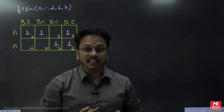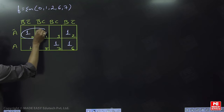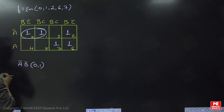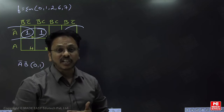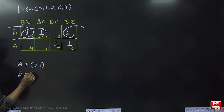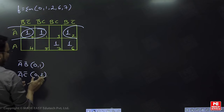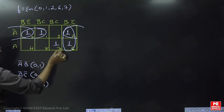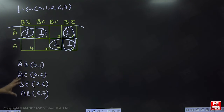First, let me consider all possible groupings, because all possible groupings are actually treated as prime implicants. Here I am taking a group of cells 0 and 1, which gives ĀB̄. Then I take cells 0 and 2, which gives ĀC̄. Then cells 2 and 6, which gives BC̄. And cells 6 and 7, which gives AB.